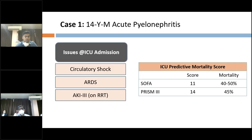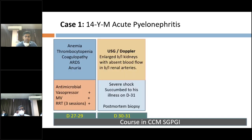After 48 hours, he was shifted to the CCM department with issues of circulatory shock, ARDS, and AKI stage 3 on renal replacement therapy. His ICU predictive mortality scores were SOFA of 11 and PRISM score of 14, with predictive mortality of 40–50% and 45% respectively. From day 27 to day 29, he was managed for anemia, thrombocytopenia, coagulopathy, ARDS, and anuria with broad-spectrum antimicrobials, vasopressor support, mechanical ventilation, and renal replacement therapy.